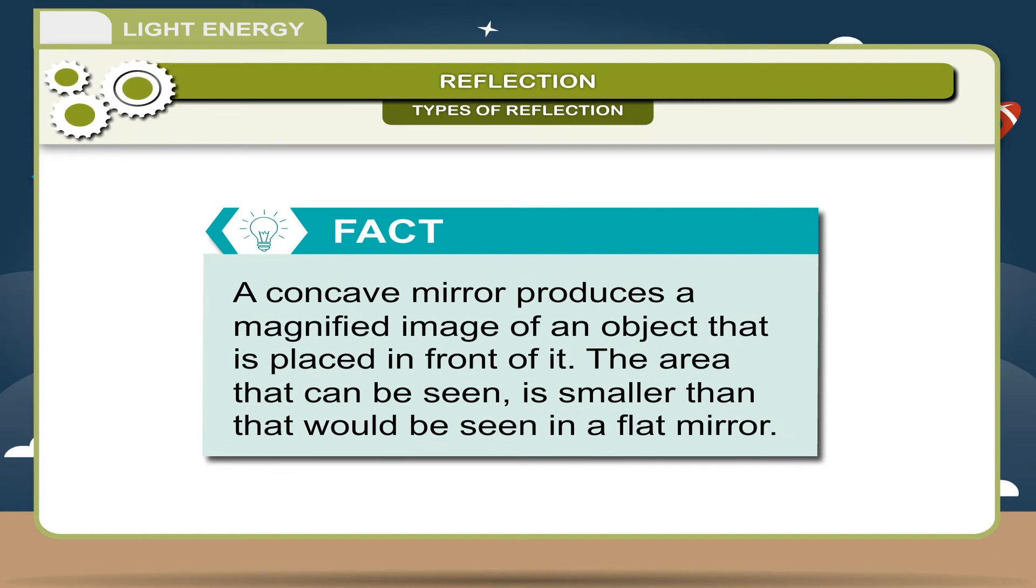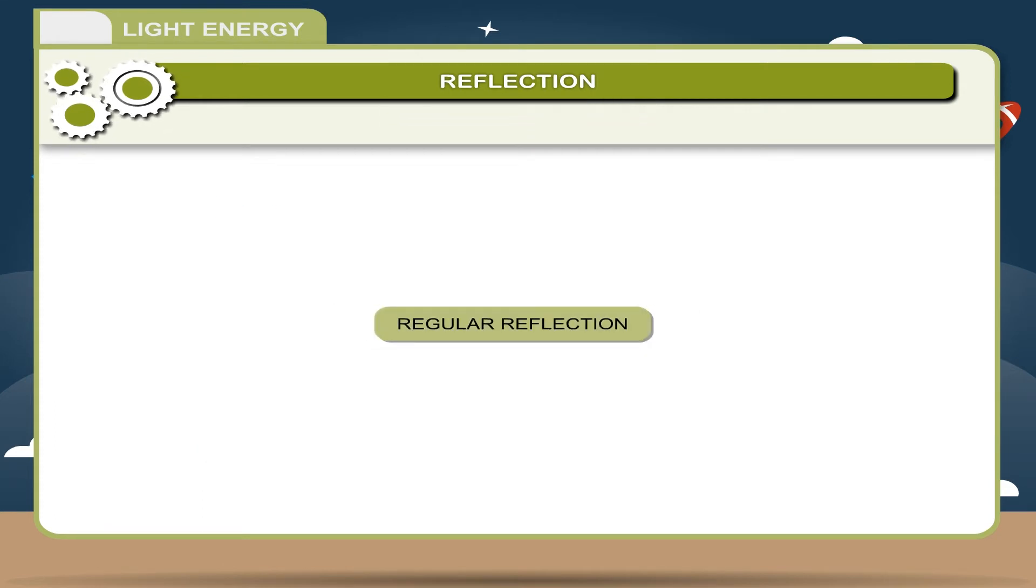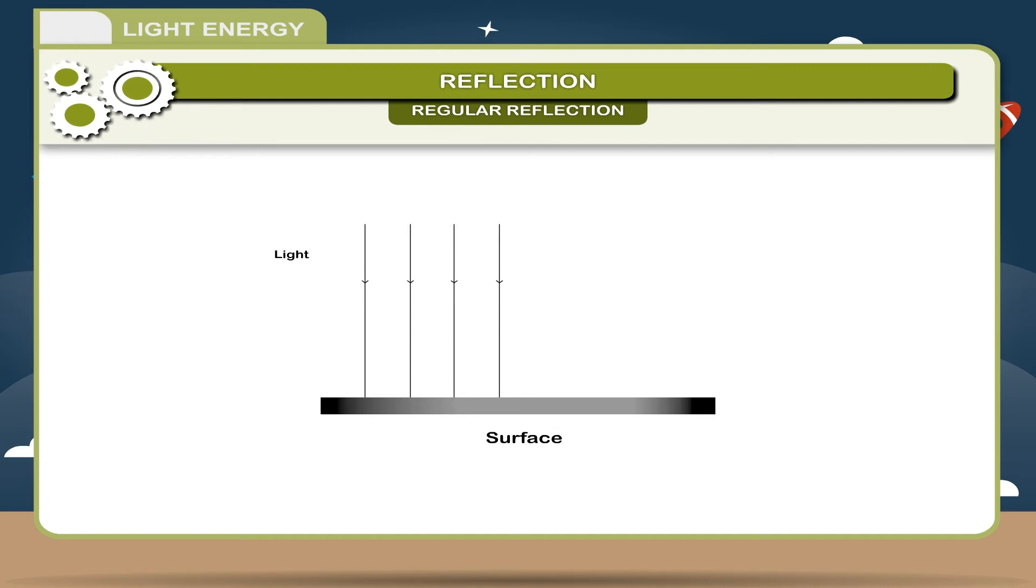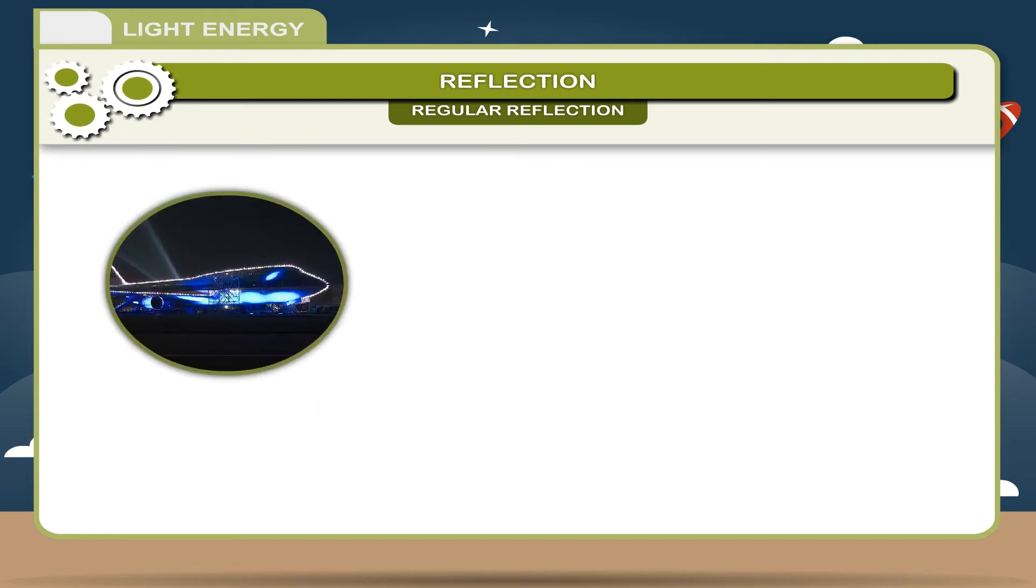Regular reflection. When a parallel beam of light strikes a smooth and polished surface, the reflected rays bounce back as a parallel beam of light. It is called regular reflection. Example: reflection of light from plane smooth mirror such as looking glass, highly polished surface, etc.